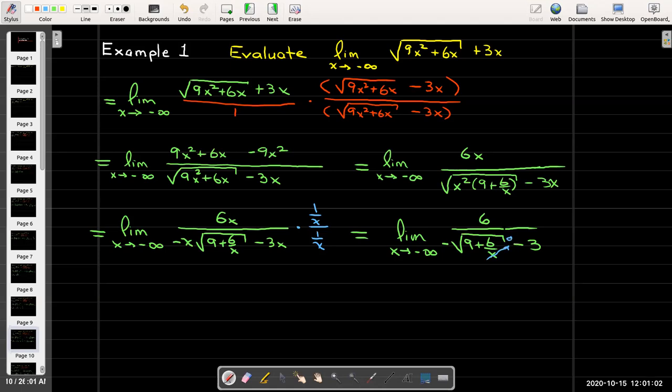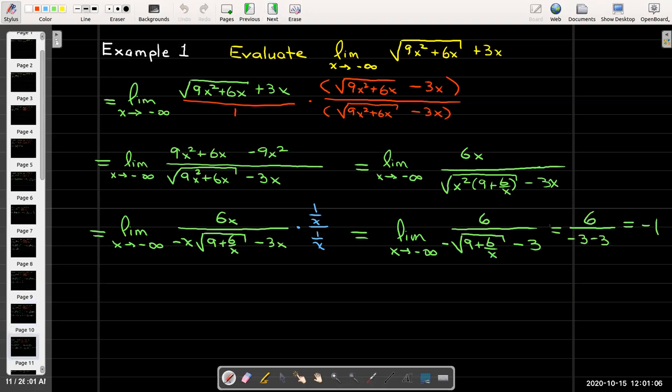So I'll be left with 6 over the opposite of √9 so minus 3 then minus 3 again. So that'll make a minus 6. 6 over negative 6 equals negative 1.